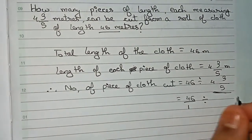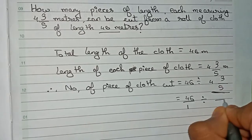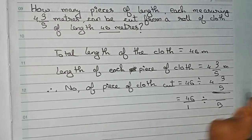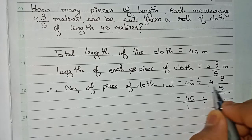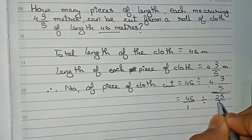To convert into improper fraction, first write the denominator 5. Now 5 times 4 is 20, plus 3 is 23. So it will become 23/5.